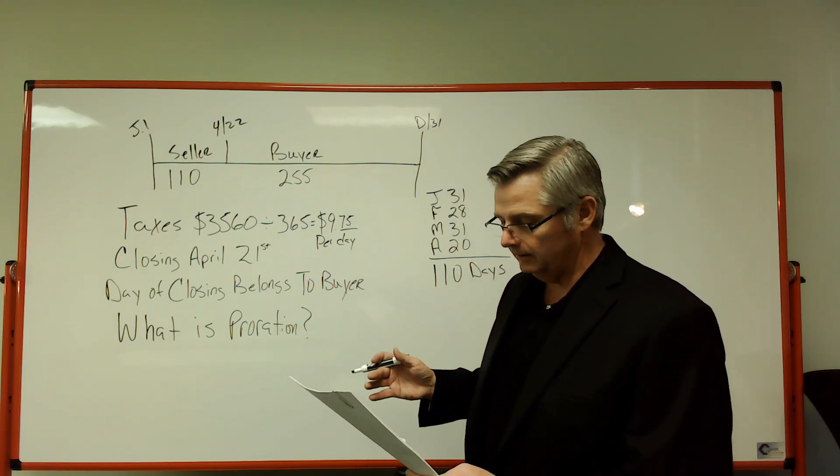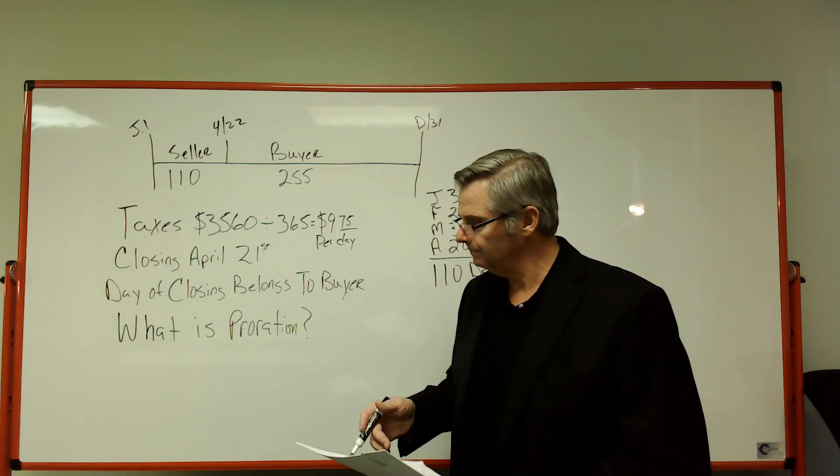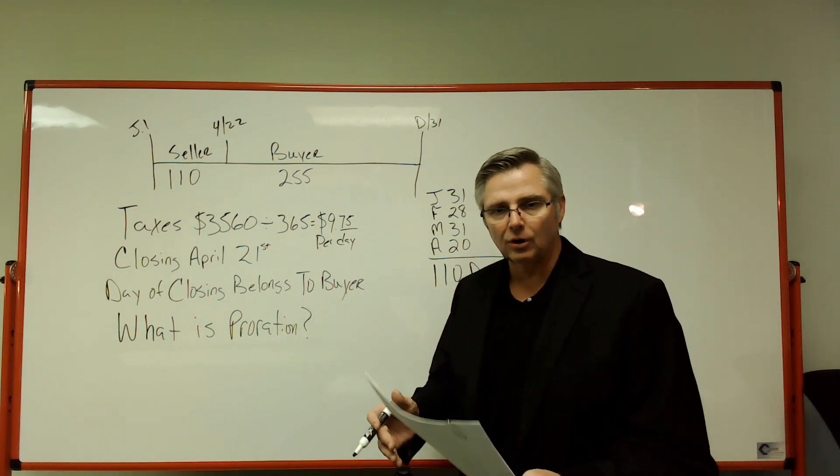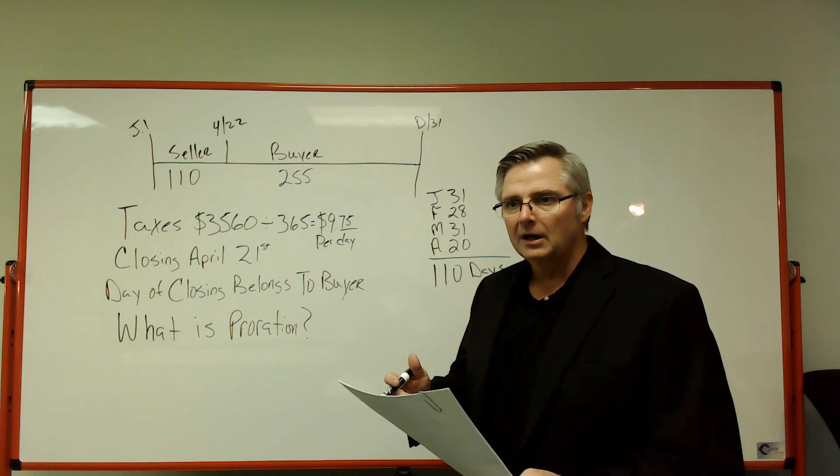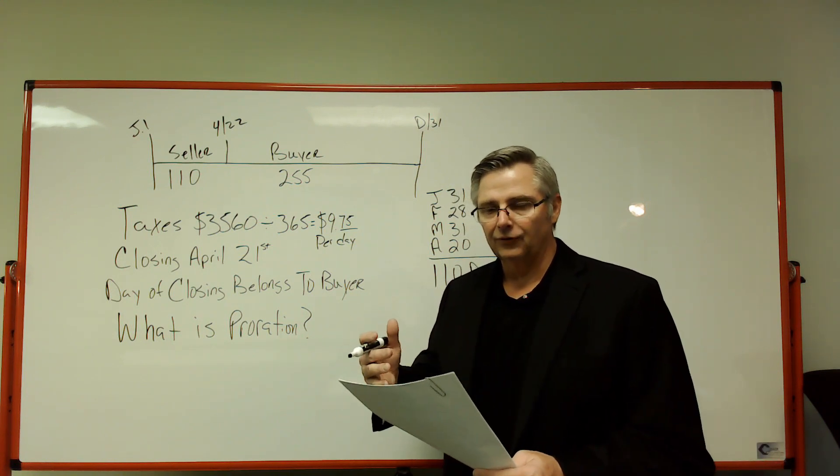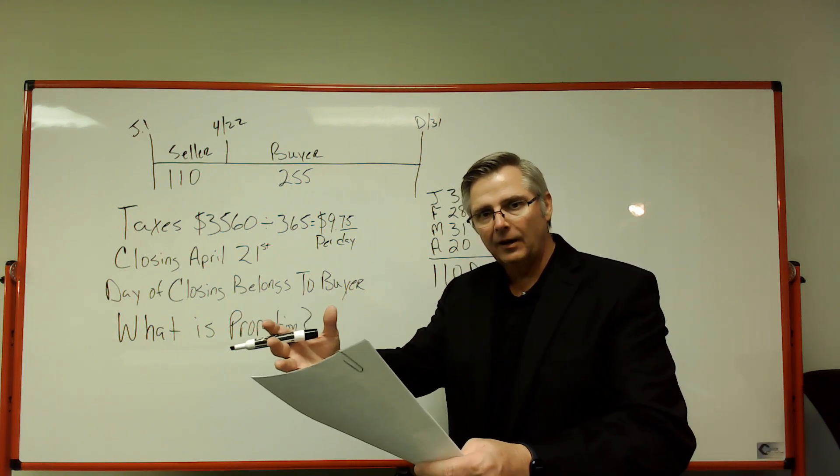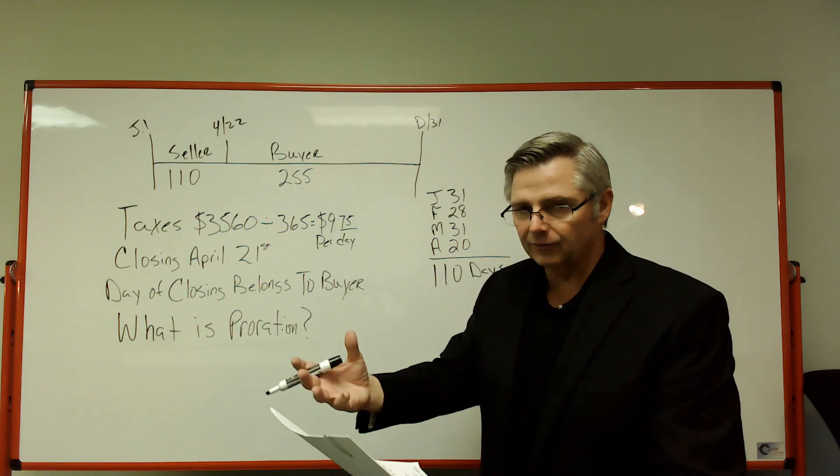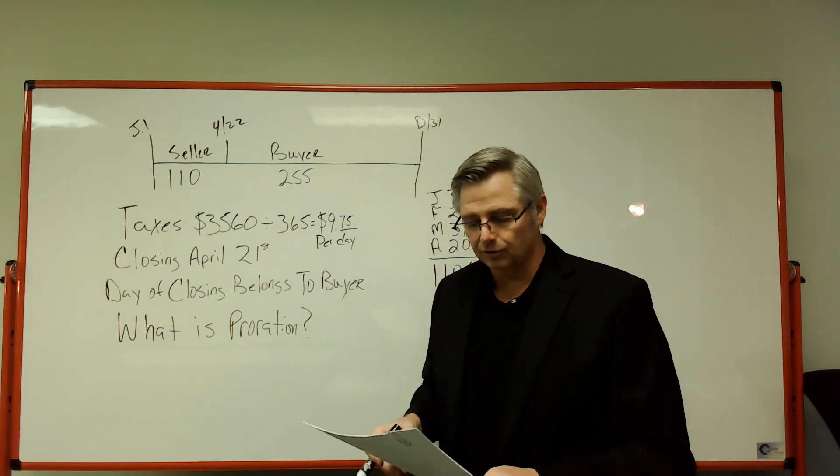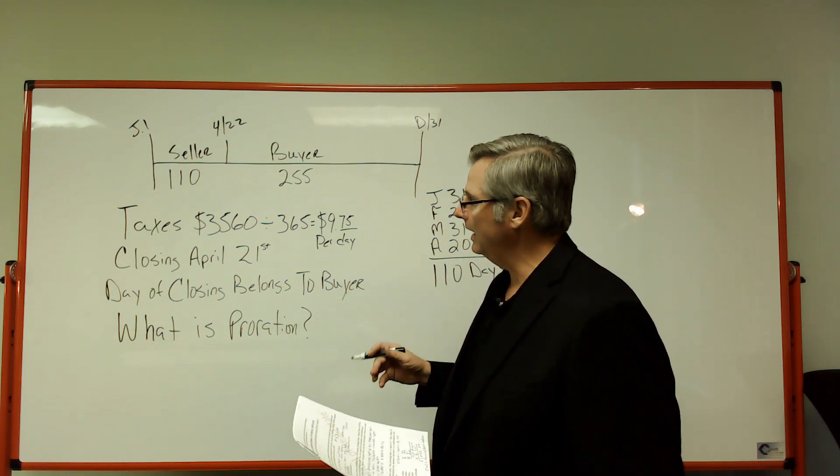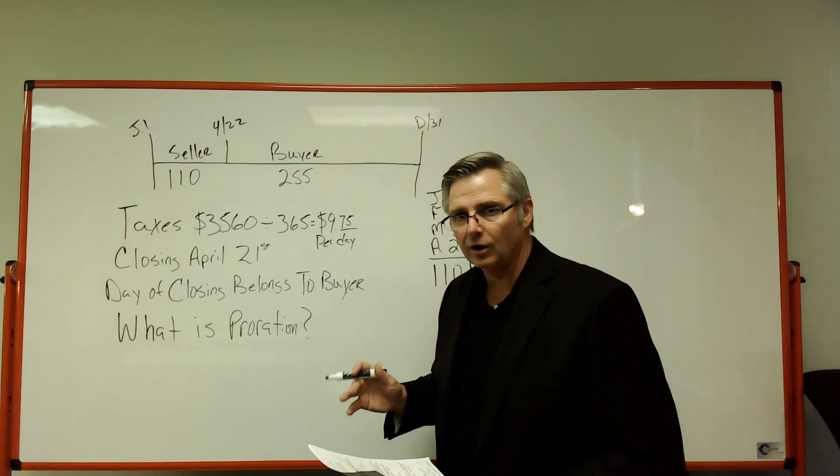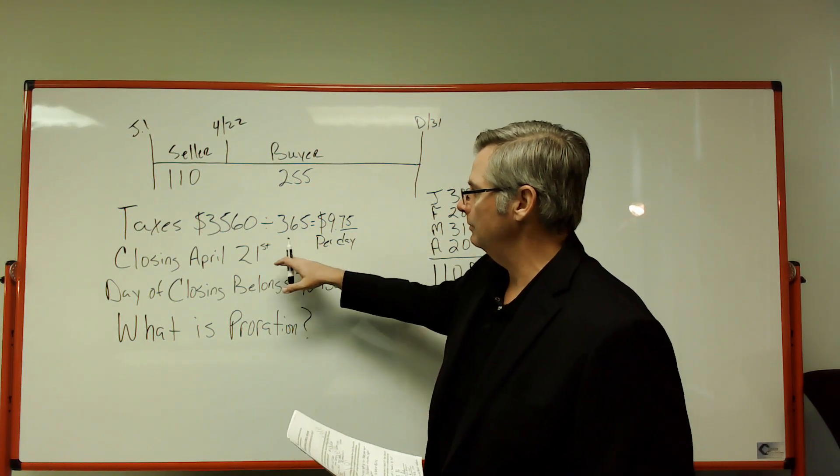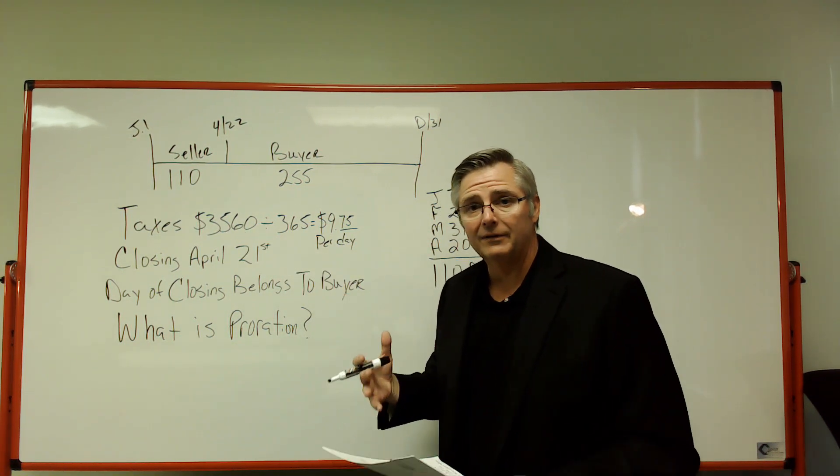Now my first move on these whenever I do a proration is determining what one party is being credited and what one party is being debited. So one party has received money and the other one is going to be debited on the closing disclosure. So I'm going to find out how much per day the taxes are on this property. I'm going to take $3,560, divide that by the 365 days in the calendar year, and that's going to give me $9.75 per day.